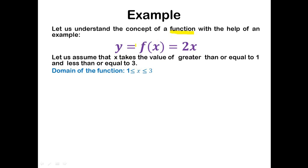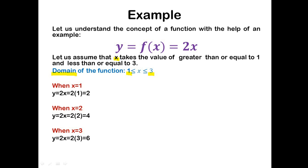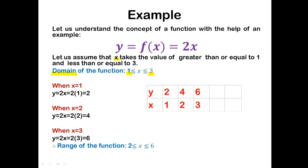Let us understand the concept of a function with the help of an example: y equals f of x which is equal to 2x. Let us assume that the independent variable x takes the value of greater than or equal to 1 and less than or equal to 3, so the domain varies from 1 to 3. When x equals 1 the value of y is 2, when x equals 2 the value of y is 4, and when x equals 3 the value of y is 6. Therefore the range of the function varies from 2 to 6.